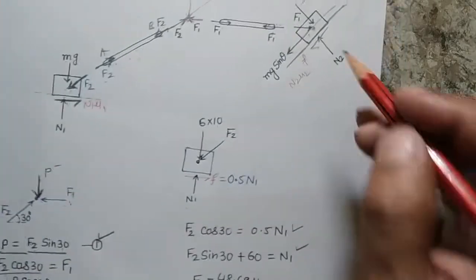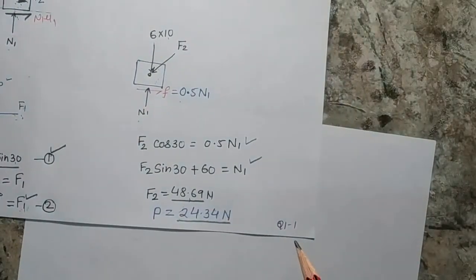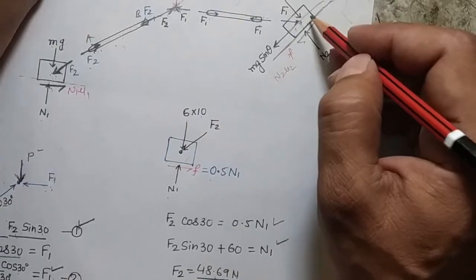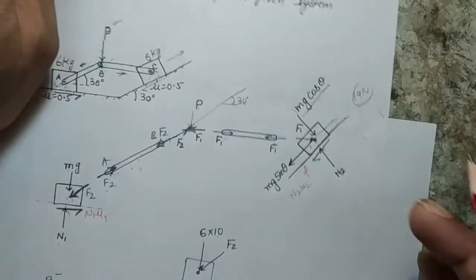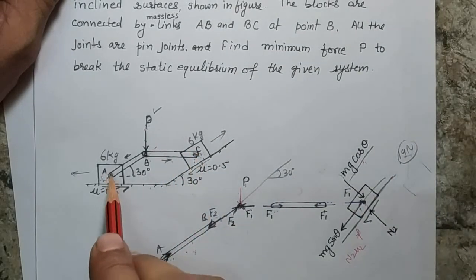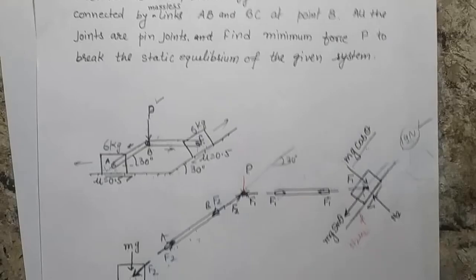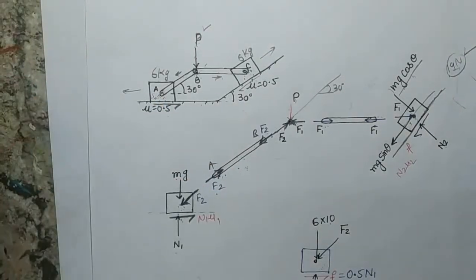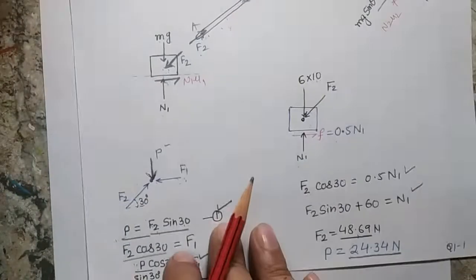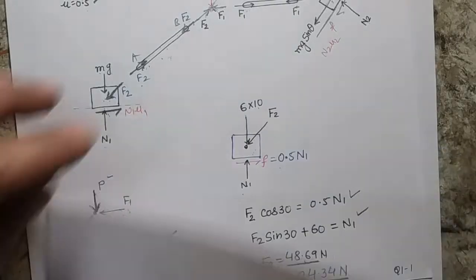We have to think more. If the answer from the second free body diagram comes out less than 24.34 N, then that smaller value would be the correct answer. For example, if it were 19 N, then as P increases from 0, block C would move at 19 N while block A remains, disturbing equilibrium at 19 N. If it's more than 24.34 N, block A moves first. We must solve the second free body diagram completely.